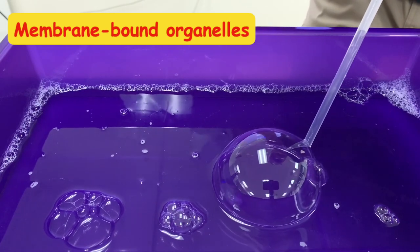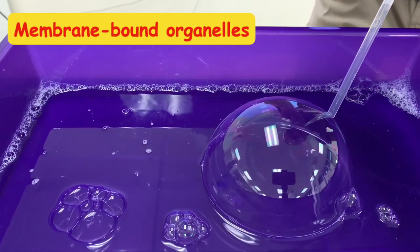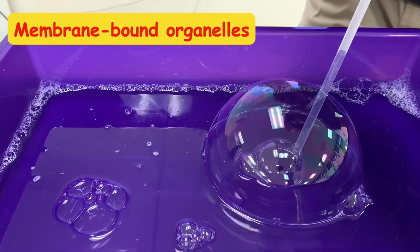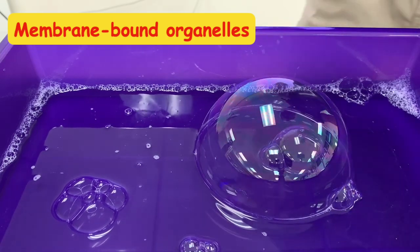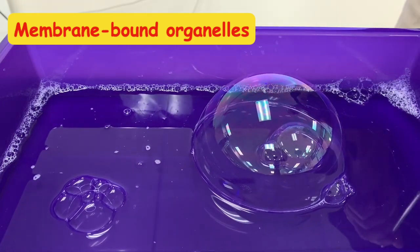You can make a large bubble with a straw by continuously blowing into it and then go inside the bubble and blow smaller ones to show that a cell has smaller membrane-bound organelles inside of it.